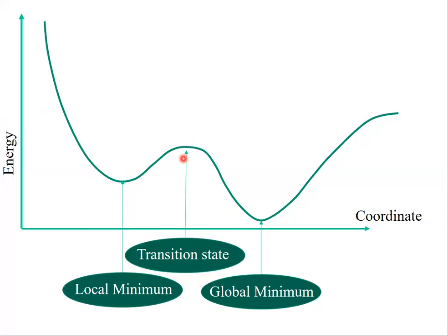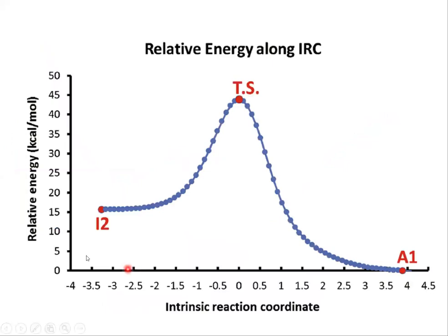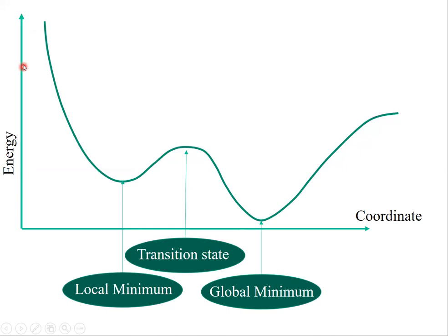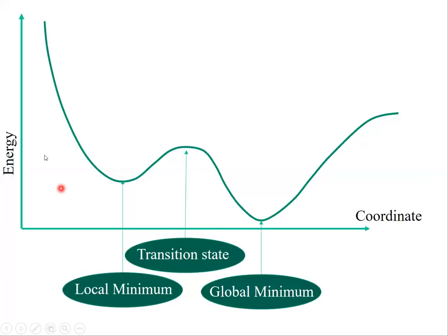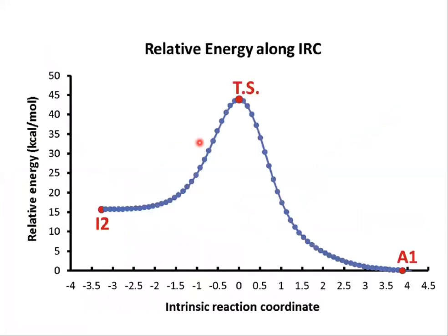Geometry optimization searches for minimum energy stationary points, while transition state search does the opposite and searches for maximum energy stationary points. The other two run types — IRC and potential energy surface — simply change geometry and measure energy. A potential energy surface scan changes the geometry and asks the program to draw the energy as a function of different geometries. If you do the same specifically for a transition state, it's called an IRC.